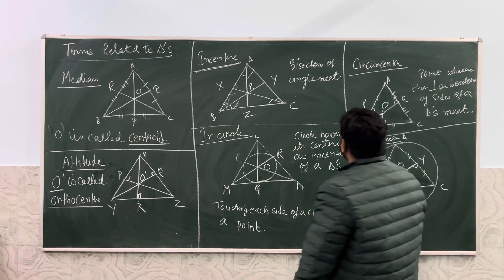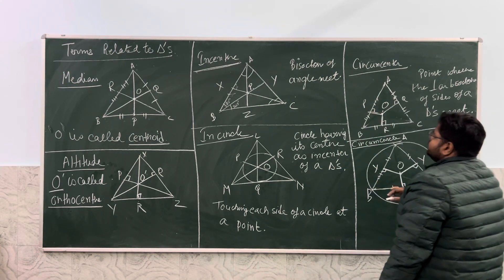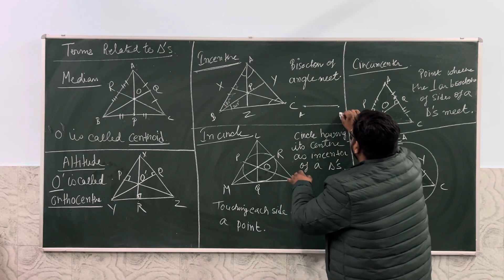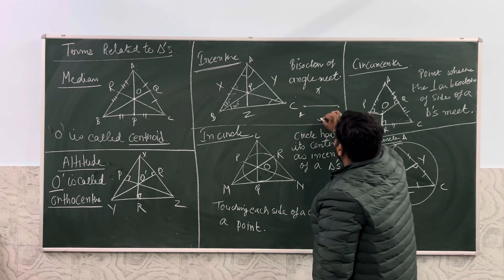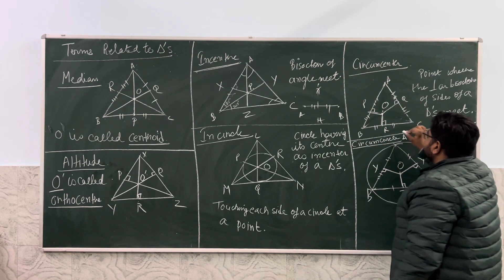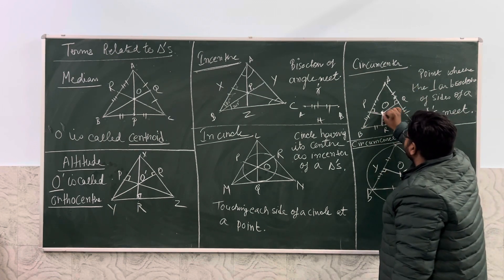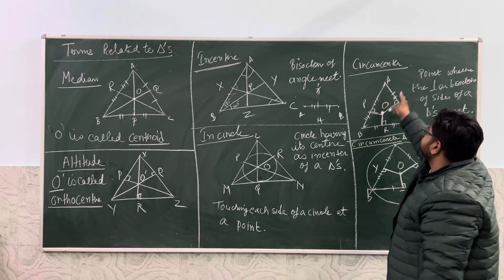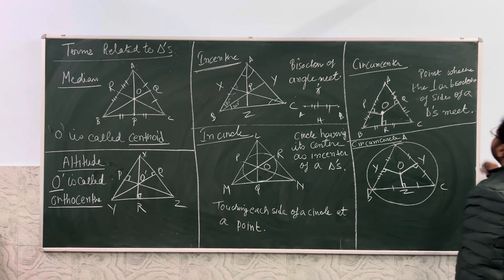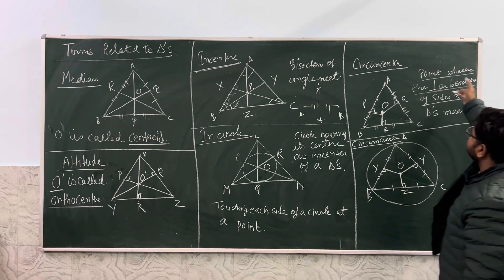The last concept is the circumcenter. If I draw the perpendicular bisectors of the sides — for a line segment AB, I keep the compass, make two arcs, and this line is divided into two equal parts. Similarly, I draw the perpendicular bisectors of sides AB, BC, and AC. These three meet at a point inside the triangle, and that point is called the circumcenter. The point where the perpendicular bisectors of the sides of the triangle meet is called the circumcenter.